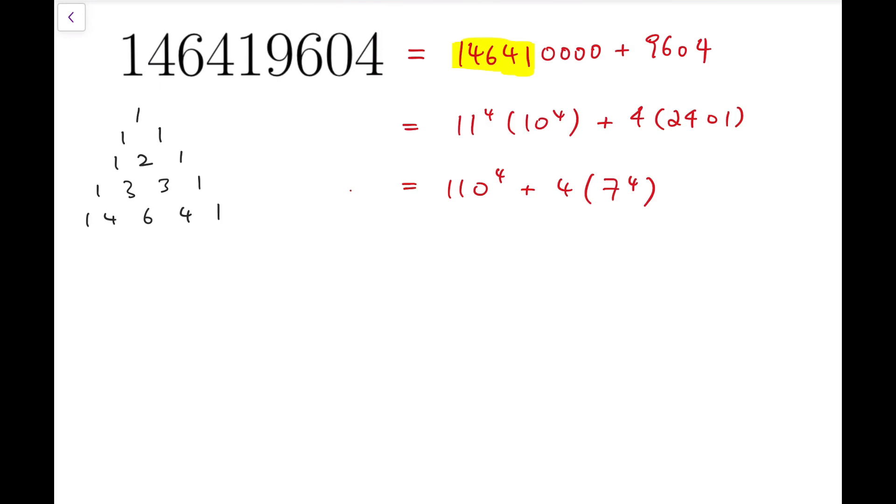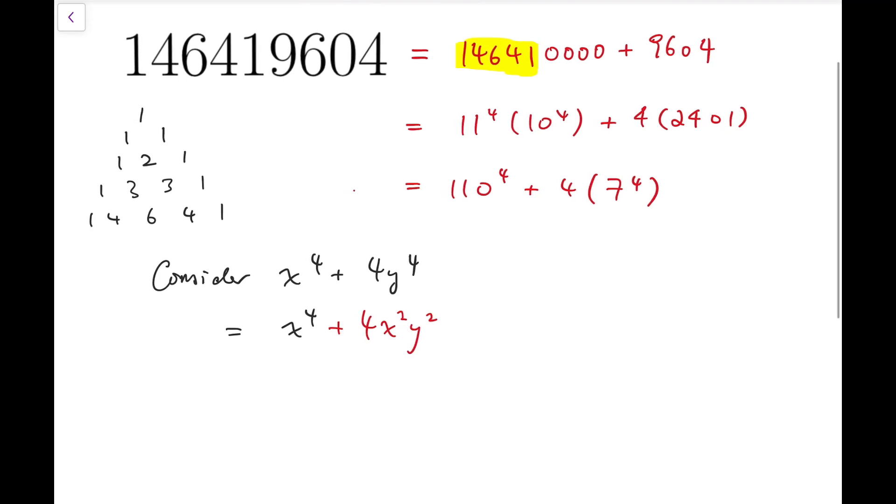The next observation is to notice that you can factorize expressions of this form. The way to factorize this is to add an extra term, which is 4x squared y squared, and you have to subtract it afterwards.